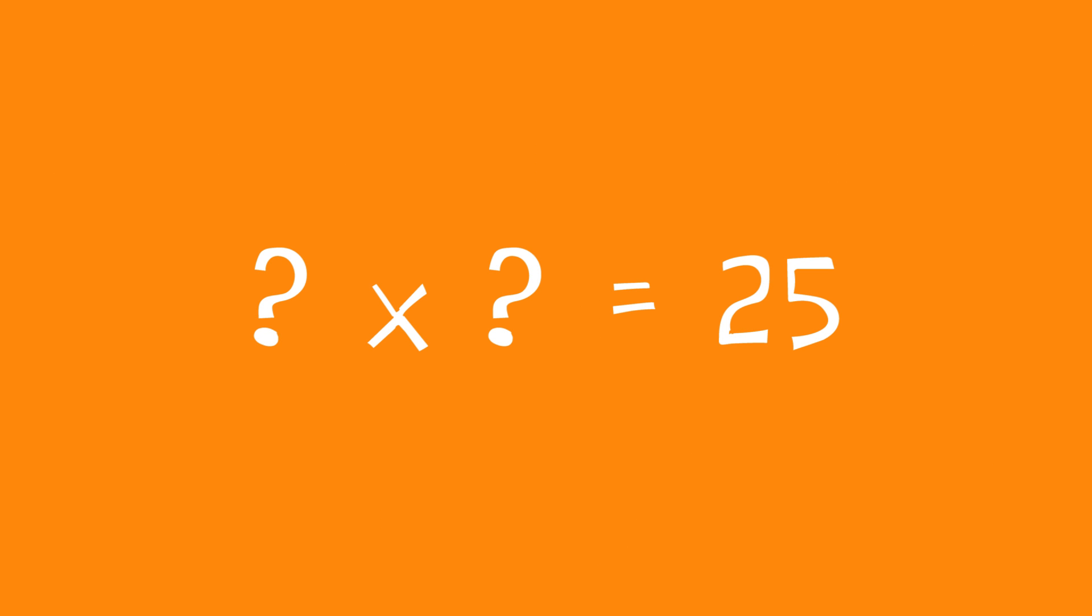To find which two identical numbers multiplied together to give a particular answer, you need to find the answer's square root. The square root of 25 is 5, and the square root of 64 is 8.